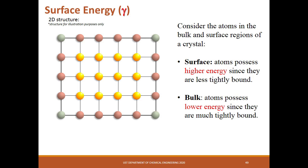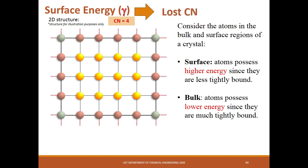In solids or crystals, the surface atoms possess higher energy since they are less tightly bound, while atoms in the bulk possess lower energy since they are more tightly bound. In a 2D structure example, the coordination number of the bulk atom is equal to 4, since it is surrounded by 4 neighboring atoms. To determine surface energy, we determine the number of lost bonds or lost coordination number. For corner atoms, the lost bond is equal to 2. For atoms along the sides, the lost bond is only 1. Corner atoms have higher surface energy than side atoms, since the higher the lost coordination number, the higher the surface energy.